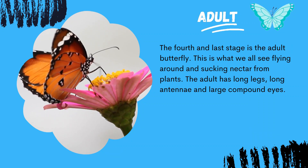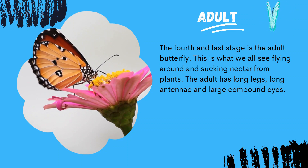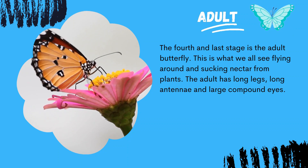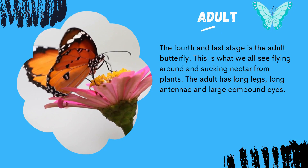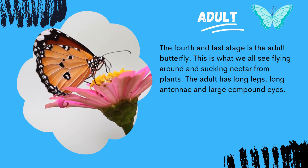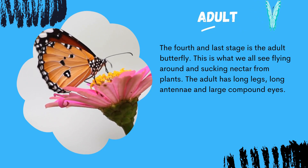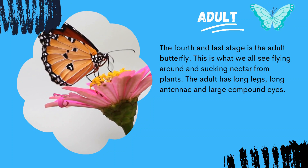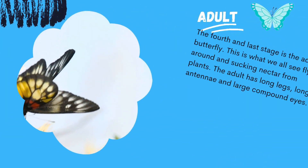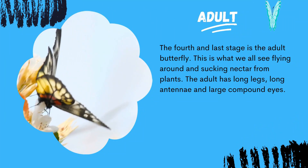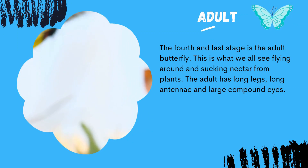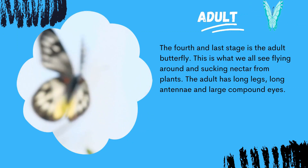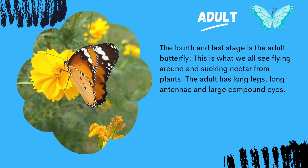The fourth and last stage is the adult butterfly. This is what we all see flying around and sucking nectar from plants. The adult has long legs, long antennae, and large compound eyes. They are colorful and can fly over long distances. At maturity, adult butterflies are once again ready to lay eggs and start the cycle all over again.